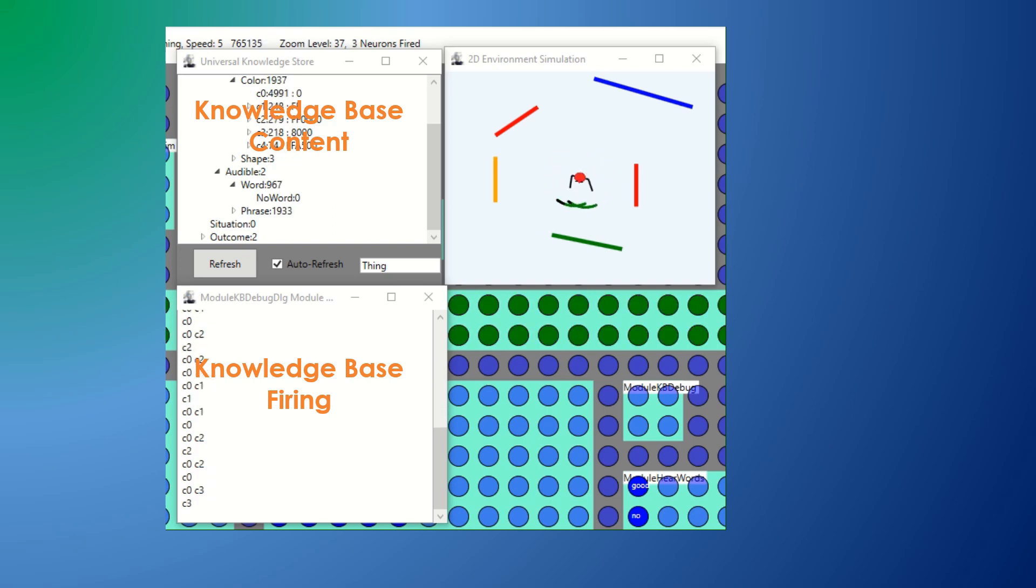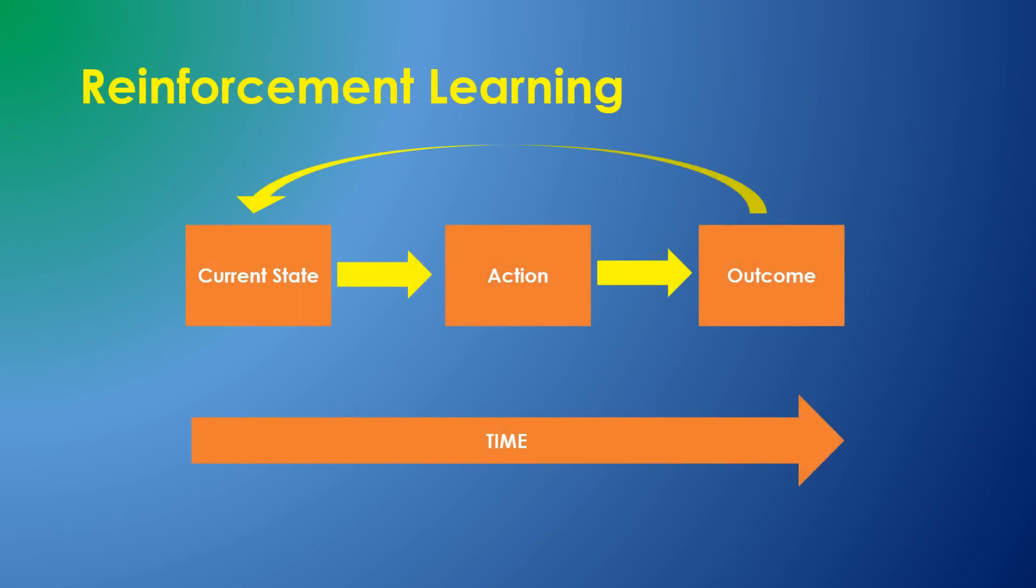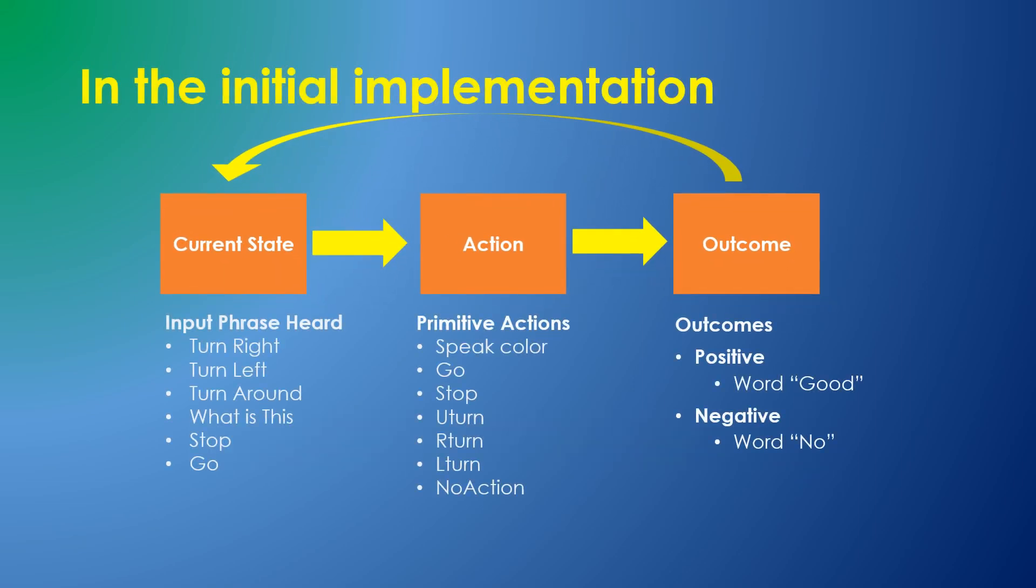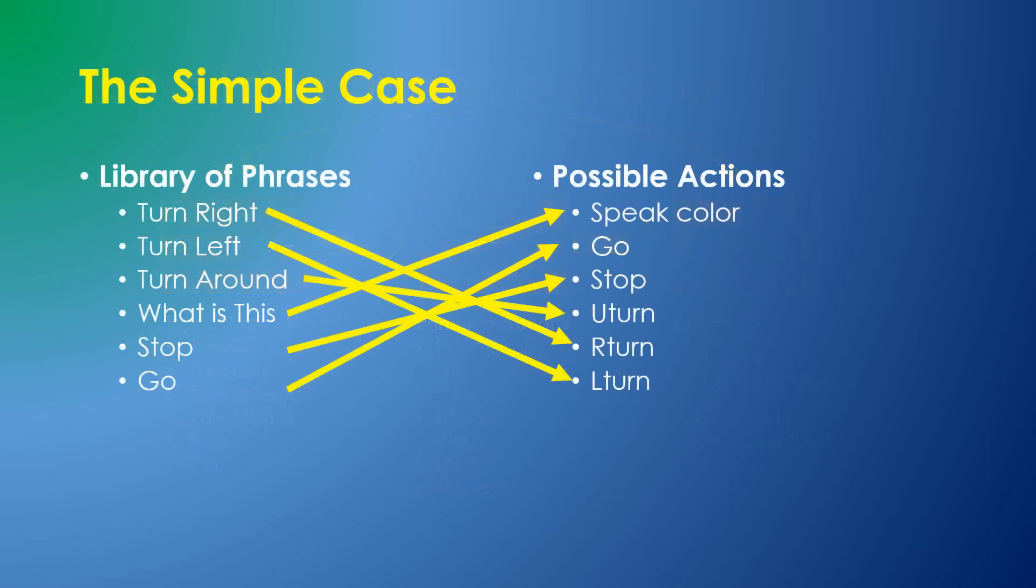For this implementation, here are the values for current state, action, and outcome which I've created. The objective at this point is for Sally to learn what each phrase means by creating links associating the phrase and the action.